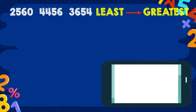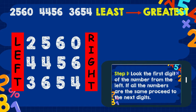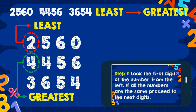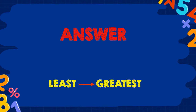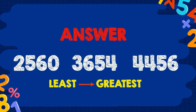Now, we arrange 2,560; 4,456; and 3,654 from least to greatest. First, we put the numbers vertically. According to the steps, we look at the first digit of each number from the left. You can see 2 is the least and 4 is the greatest. Therefore, the arrangement from least to greatest is 2,516; 3,654; and 4,456.